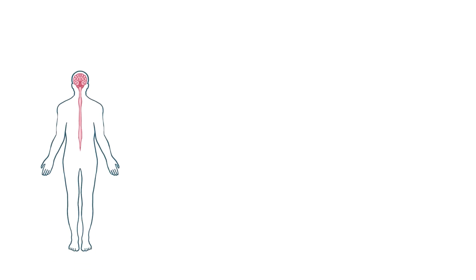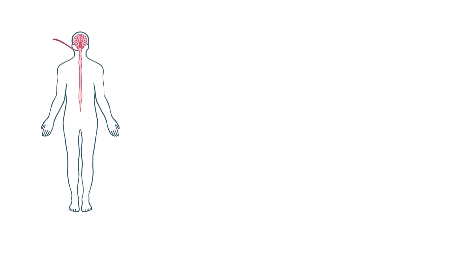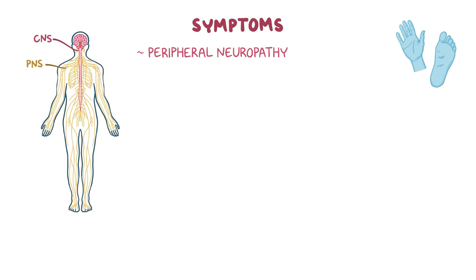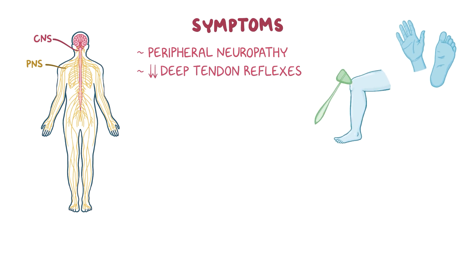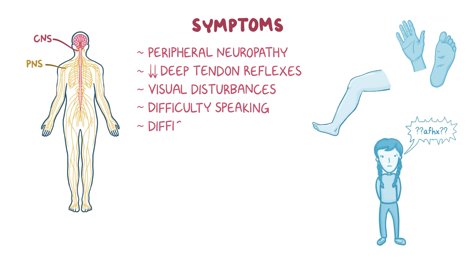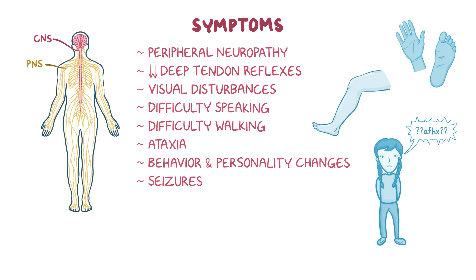Demyelination in MLD occurs both in the central as well as the peripheral nervous system, resulting in a variety of symptoms. Common symptoms include peripheral neuropathy, which is the loss of sensation in the extremities, diminished deep tendon reflexes, visual disturbances, difficulty in speaking, difficulty in walking, ataxia, behavior and personality changes, and seizures.